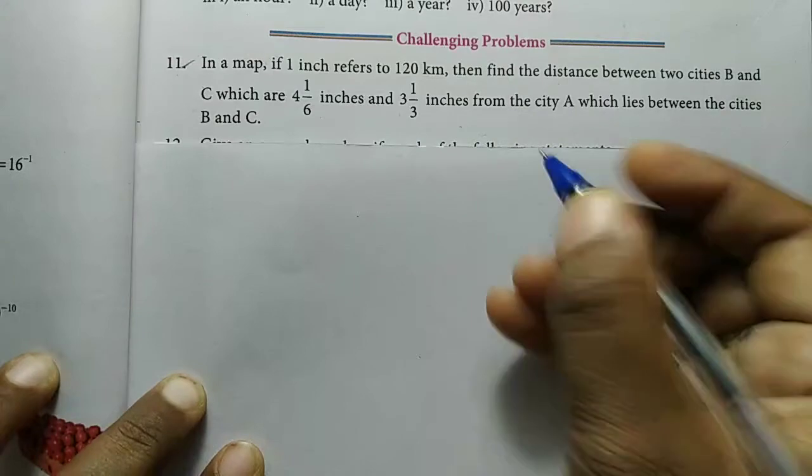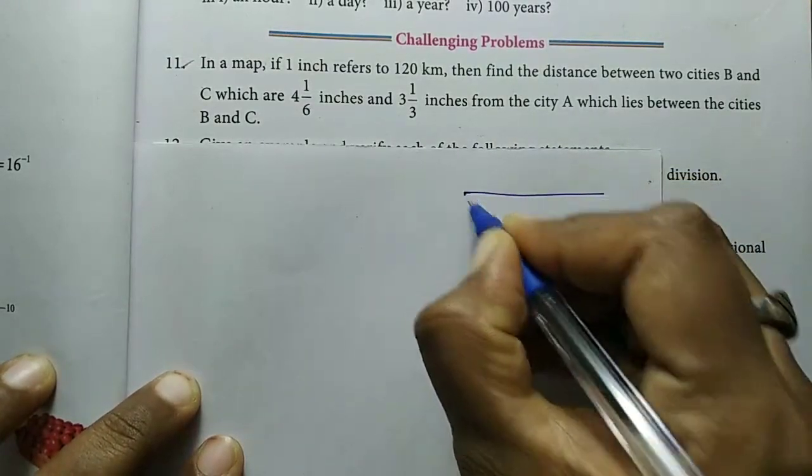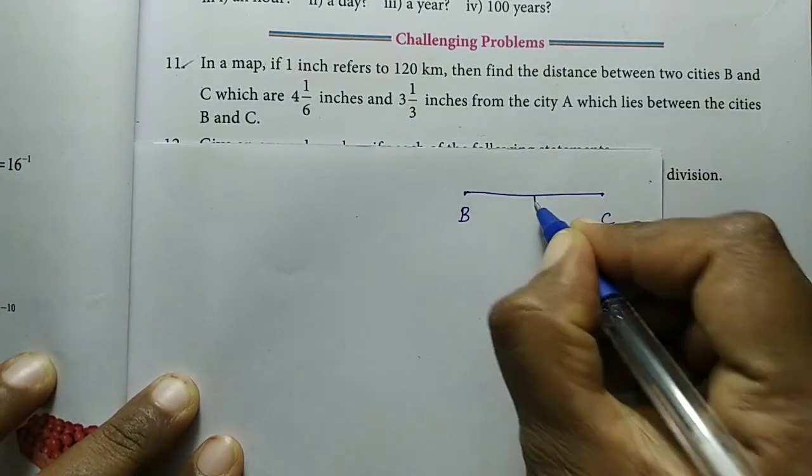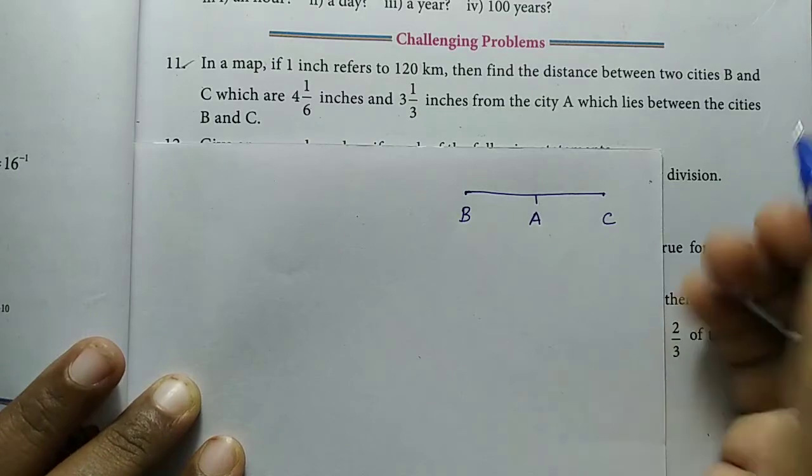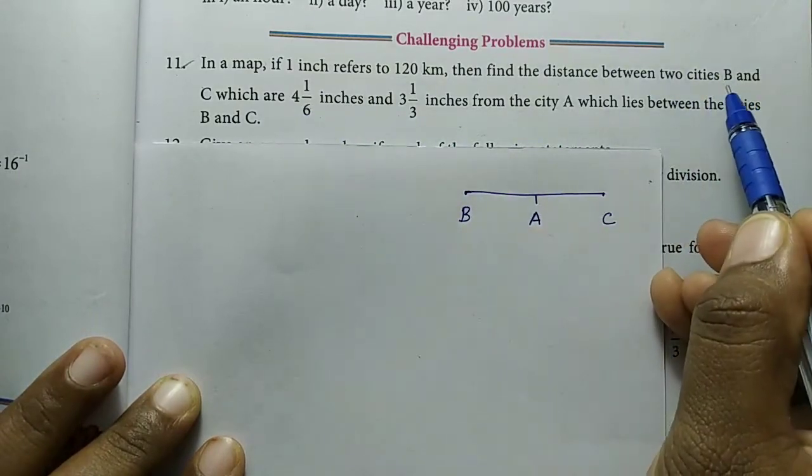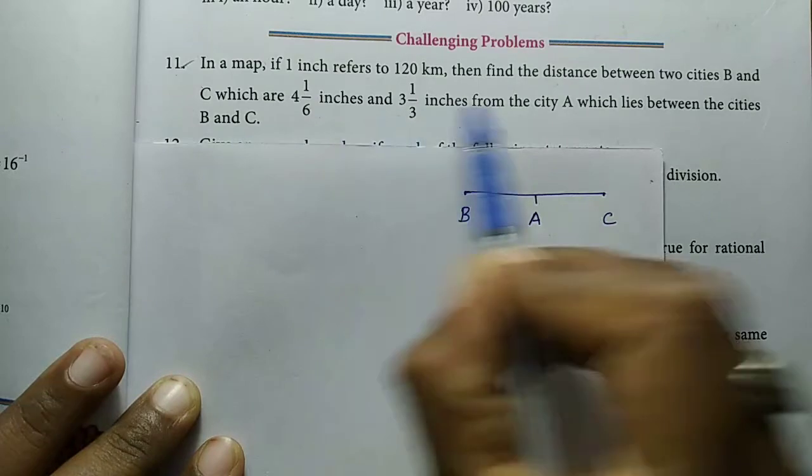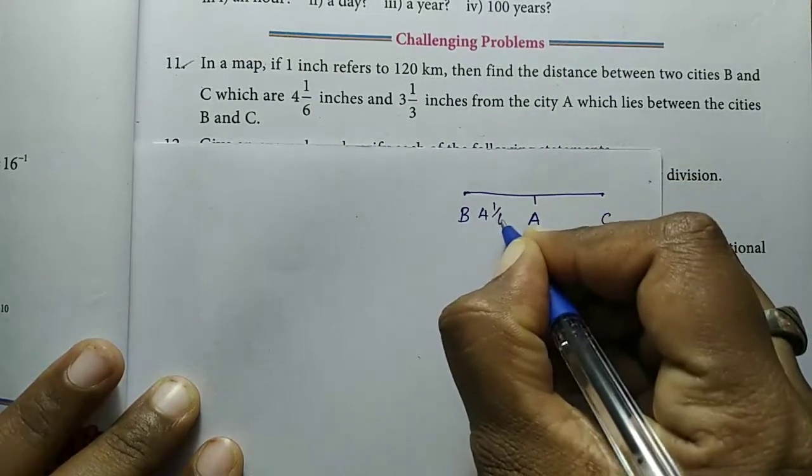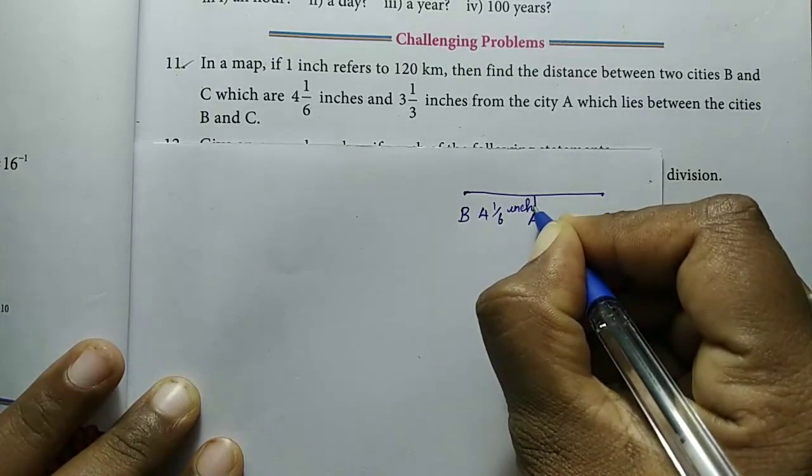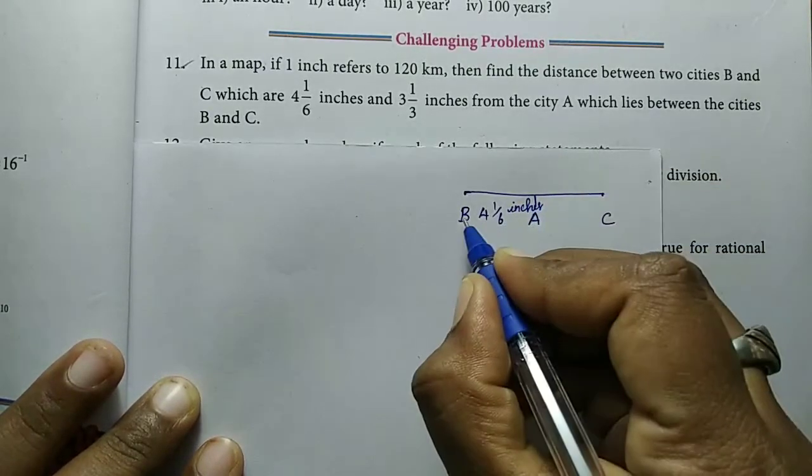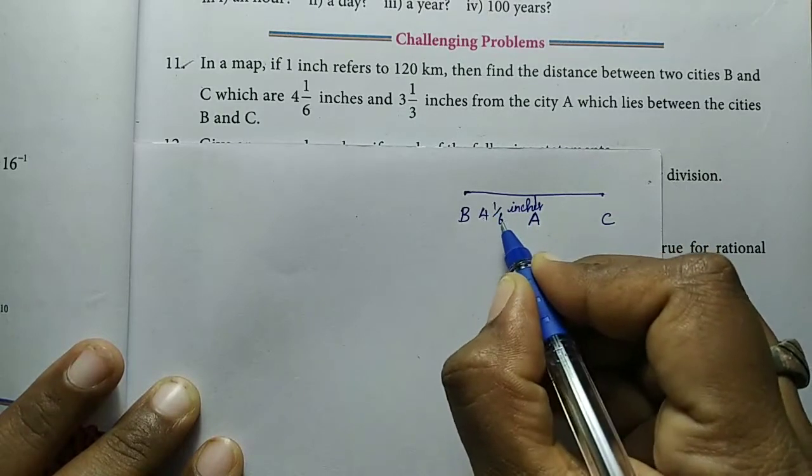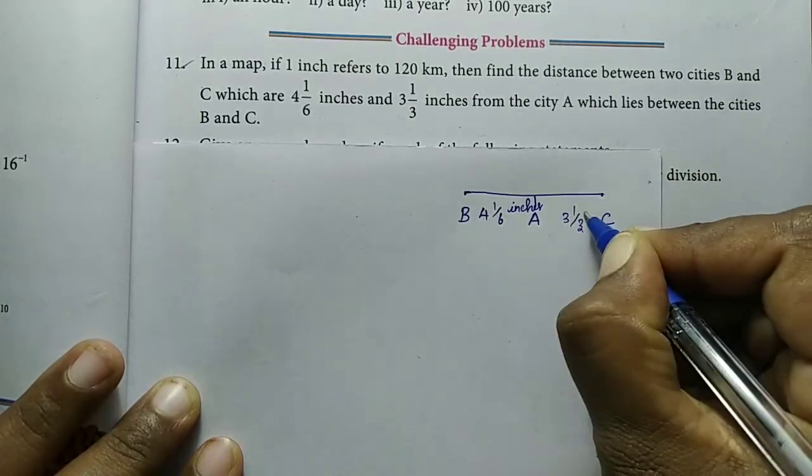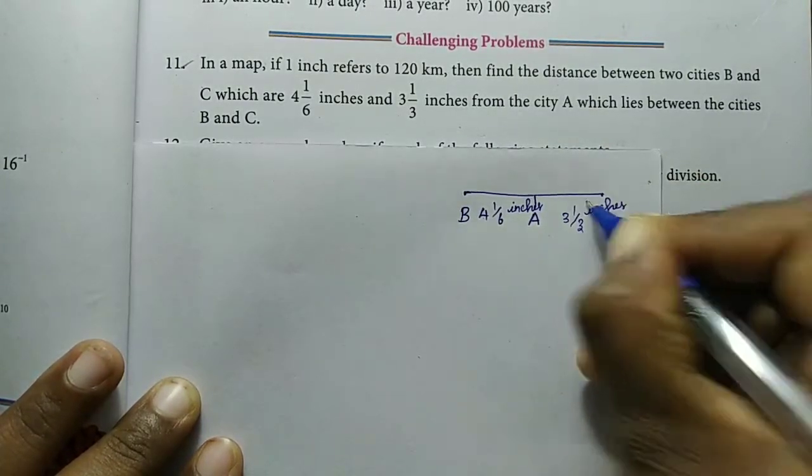City B is on one edge, and city C is on the other edge, with A in between. The distance between A and B is 4 1/6 inches. The map values are in inches or centimeters. Then the distance between city C and A is 3 1/3 inches.